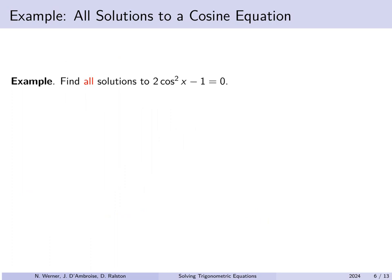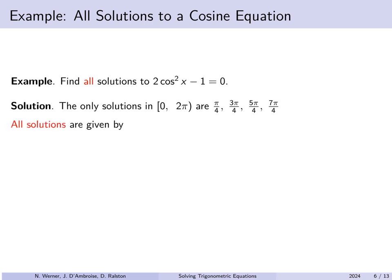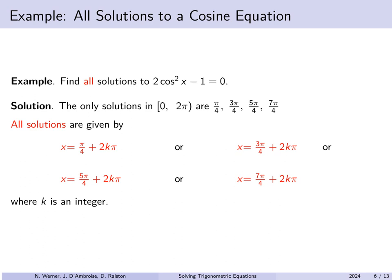Another example: let's find all solutions to 2cos²x − 1 = 0. Earlier we found the only solutions between 0 and 2π are π/4, 3π/4, 5π/4, and 7π/4. To find all solutions, we take each base solution and add 2kπ for any integer k — positive, negative, or zero. So all possible solutions are π/4 + 2kπ, or 3π/4 + 2kπ, or 5π/4 + 2kπ, or 7π/4 + 2kπ, for any integer k.